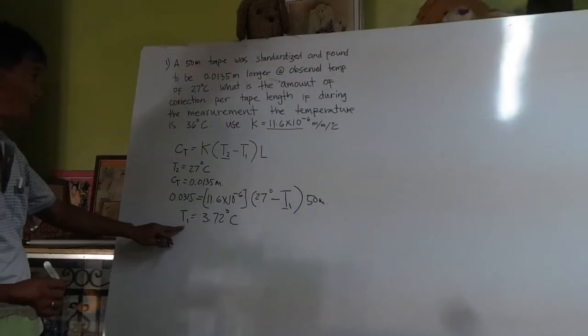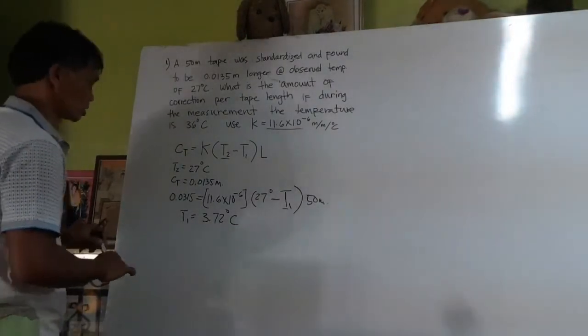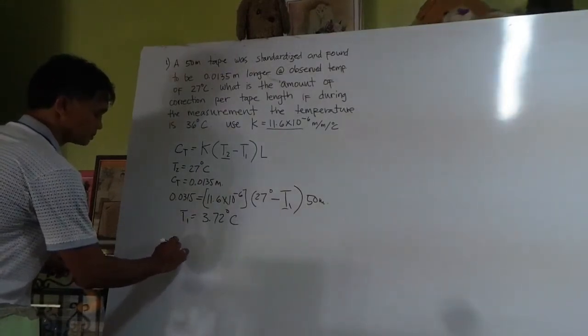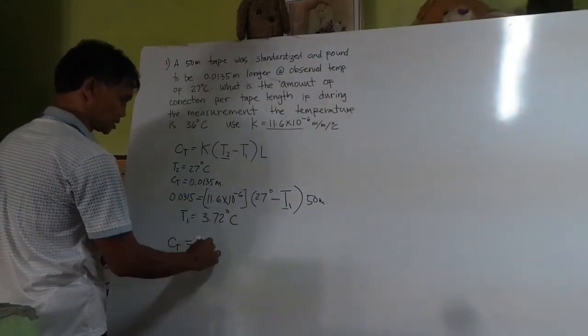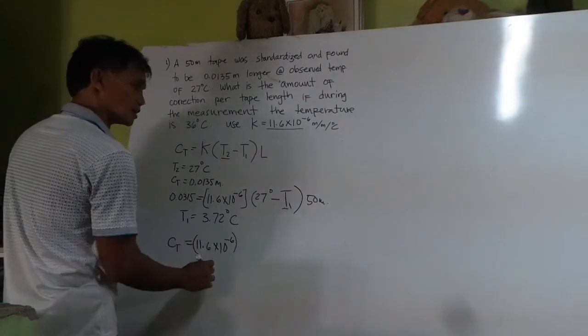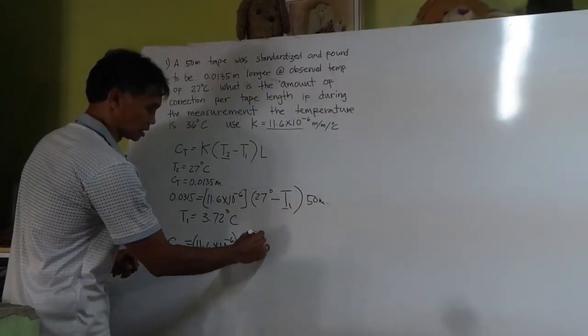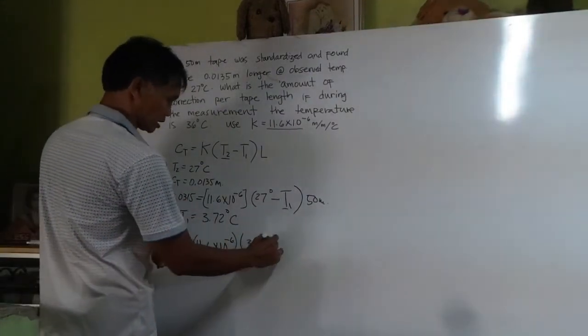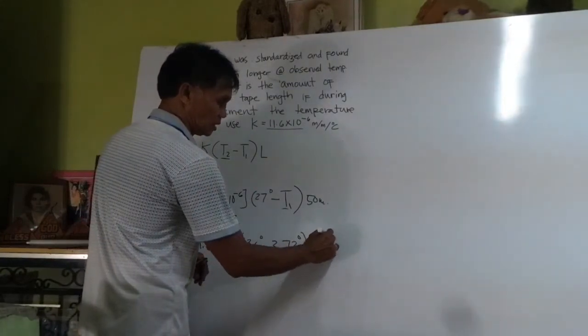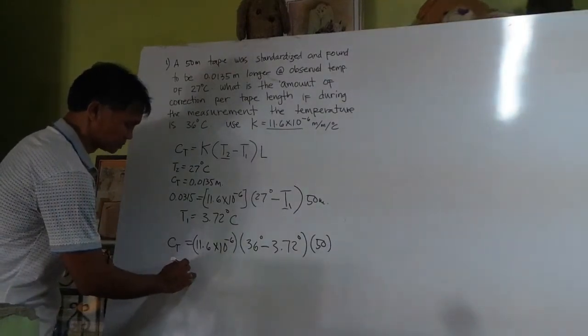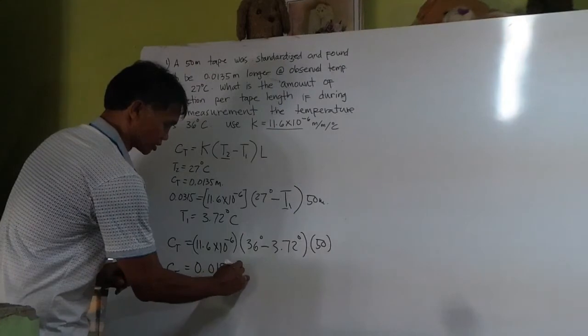You can solve now what is the correction when your temperature increases to 36 degrees Celsius. The correction of the tape during the increase of the temperature to 36 degrees is equal to the same formula: 11.6 times 10 to the power of negative 6, the actual temperature which is now 36 degrees, minus the standard temperature which is 3.72 degrees Celsius, multiplied by the tape length which is 50 meters. Our correction now will be equivalent to 0.0183 meters per tape length.